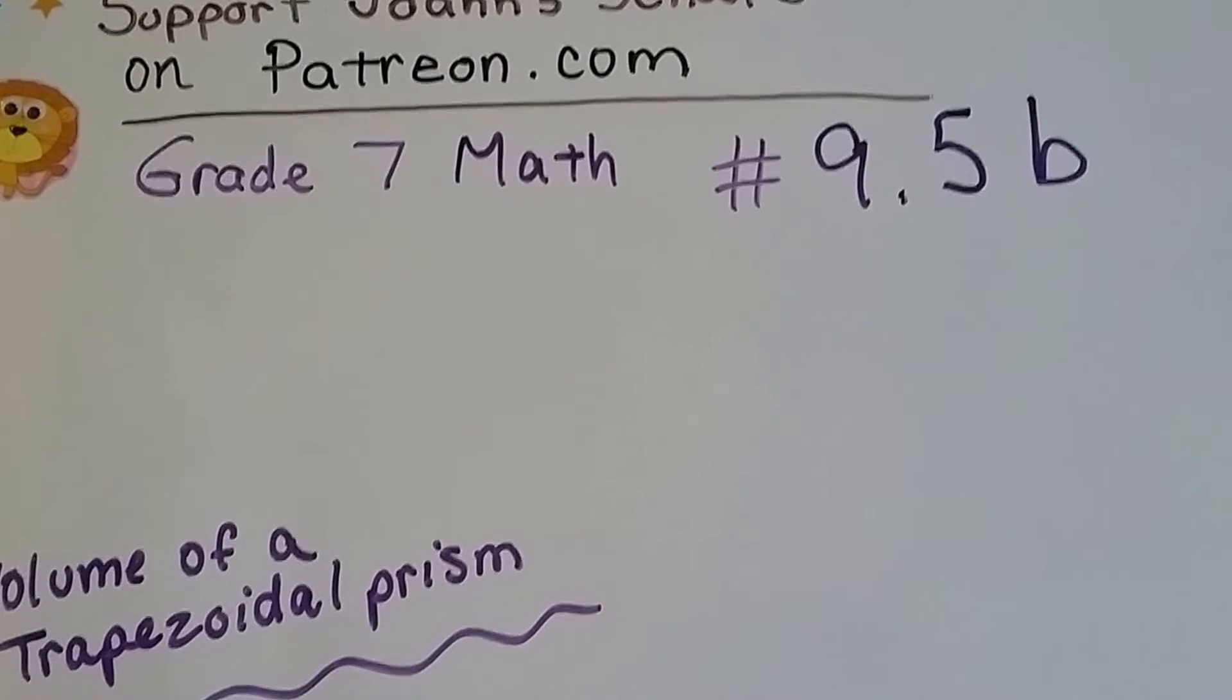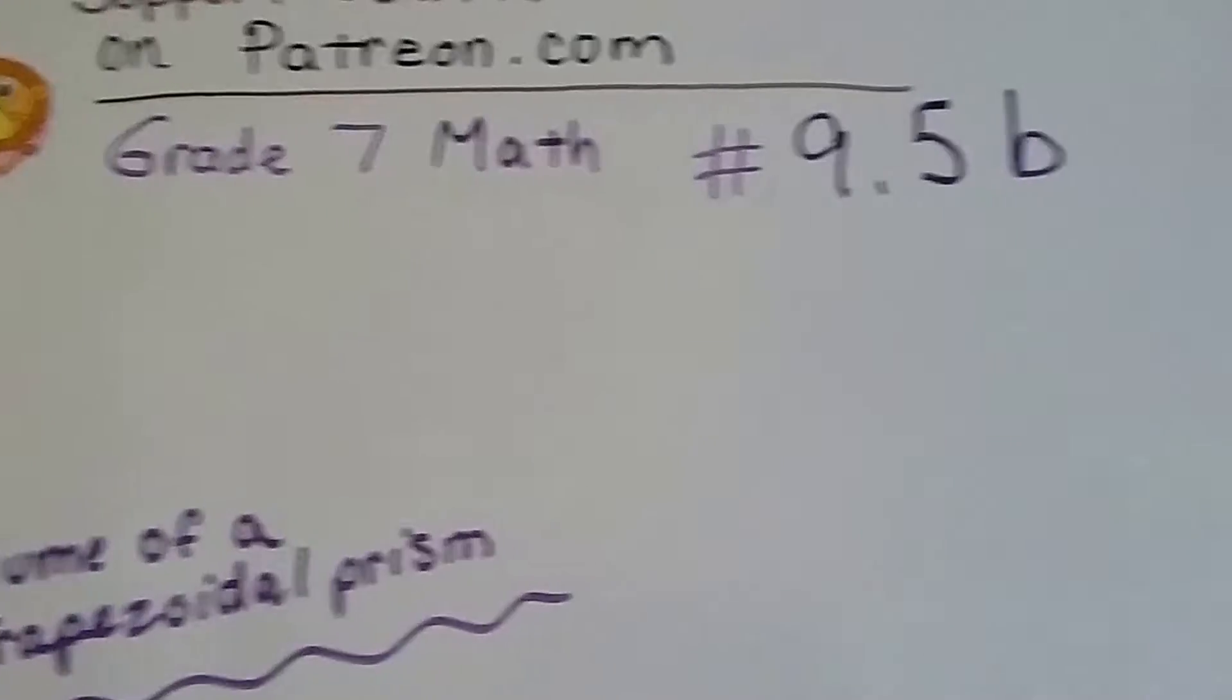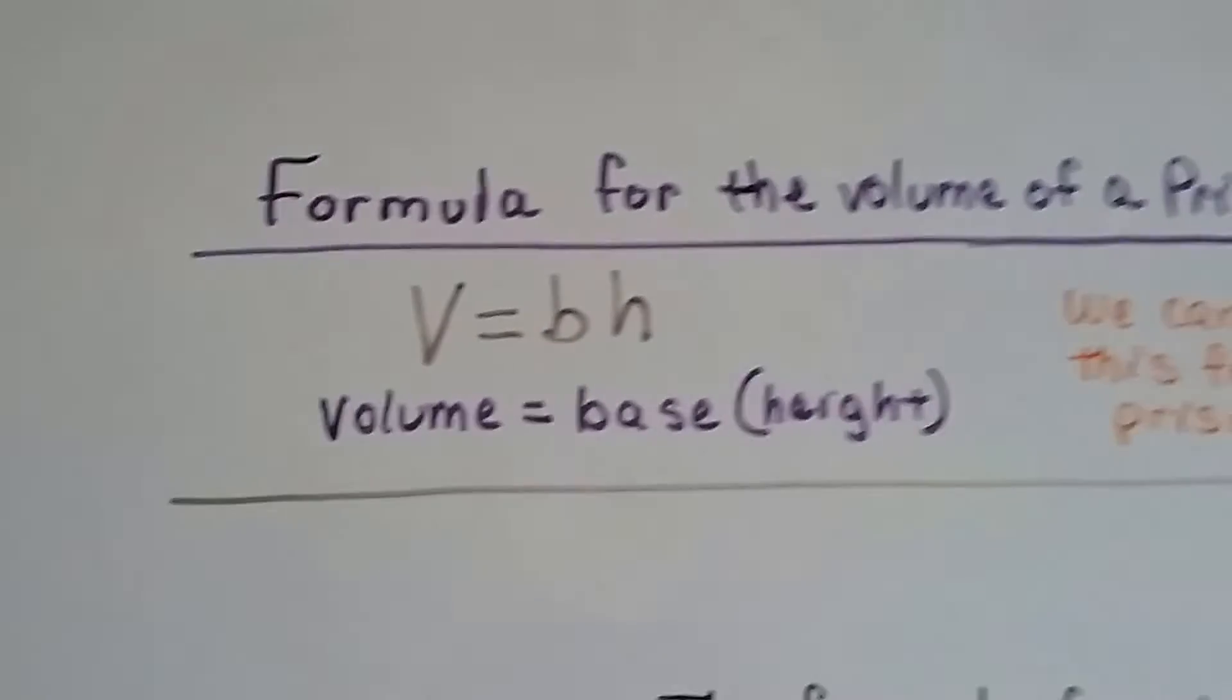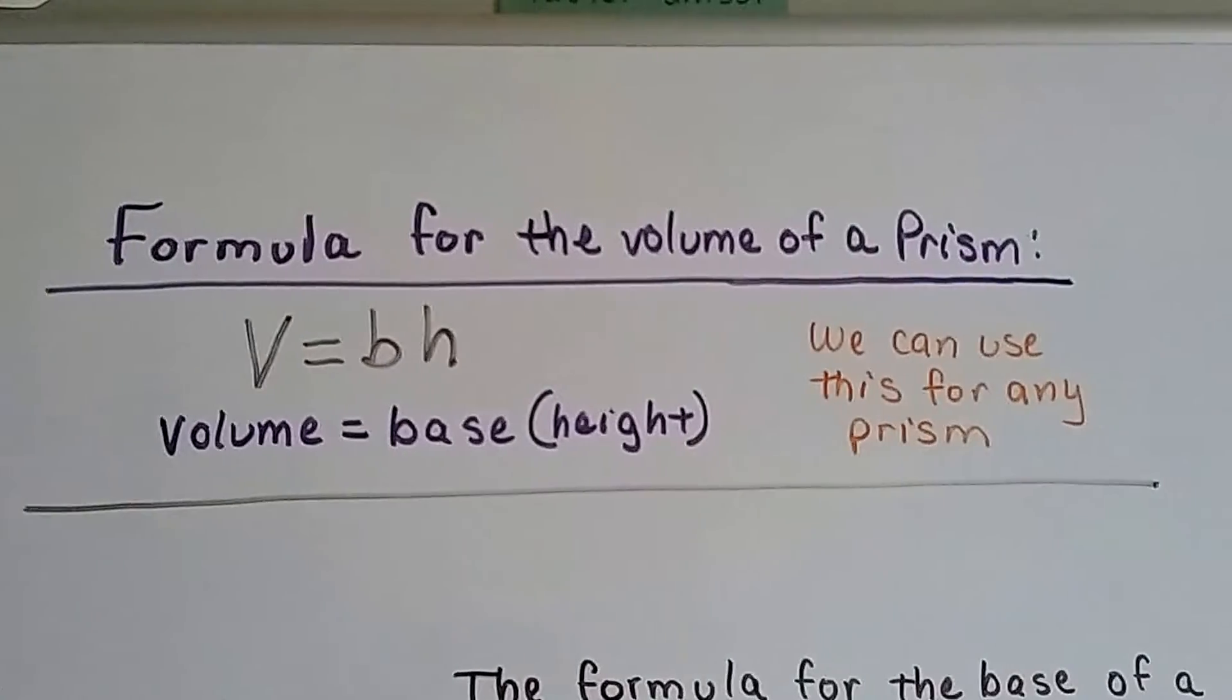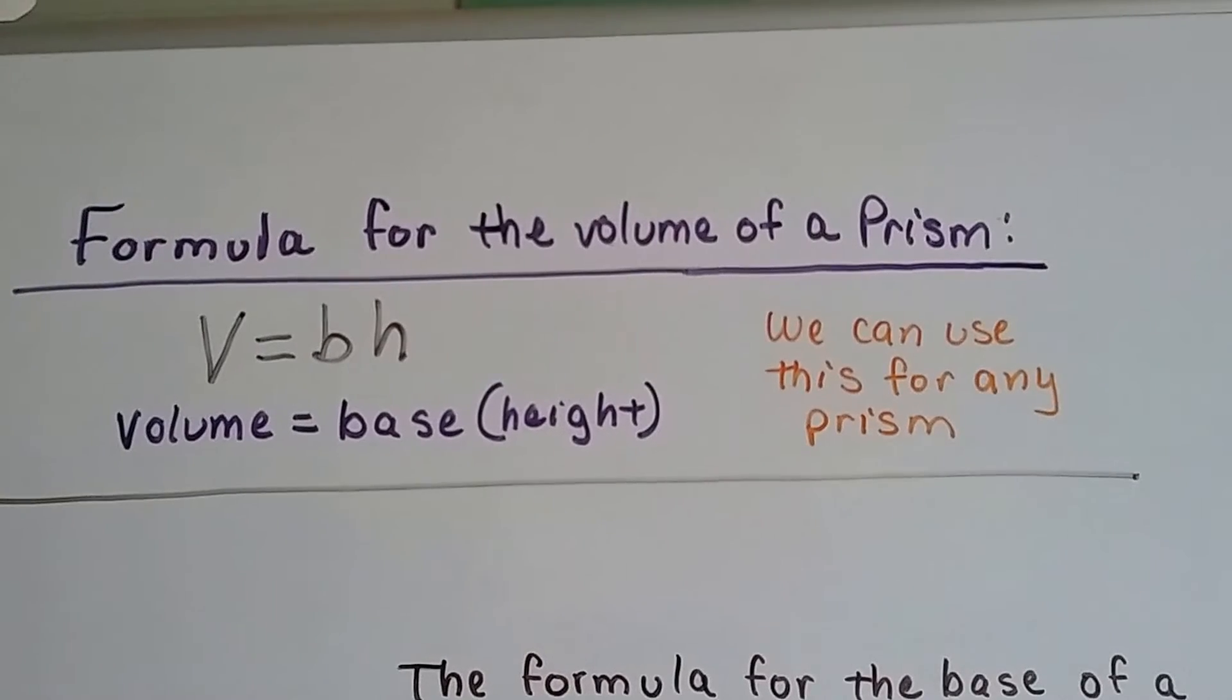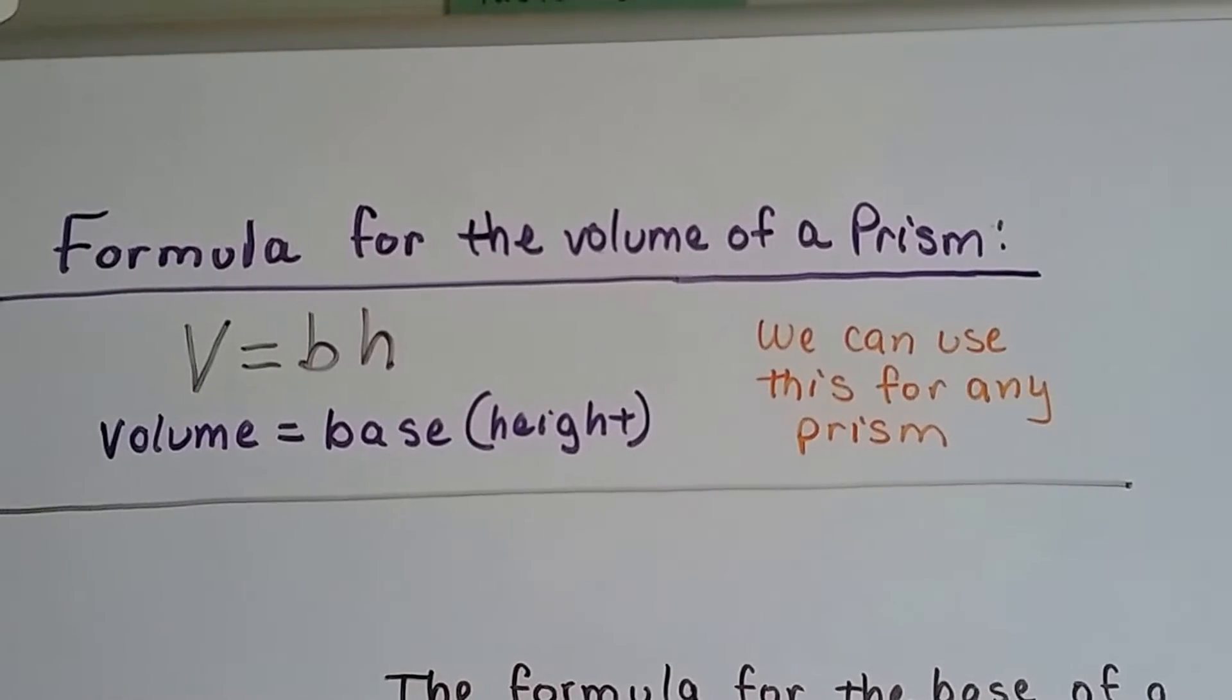Grade 7 math number 9.5b, volume of a trapezoidal prism. You saw this in the last video, the formula for the volume of a prism. V equals bh, that's volume equals base times height, and we can use this for any prism.